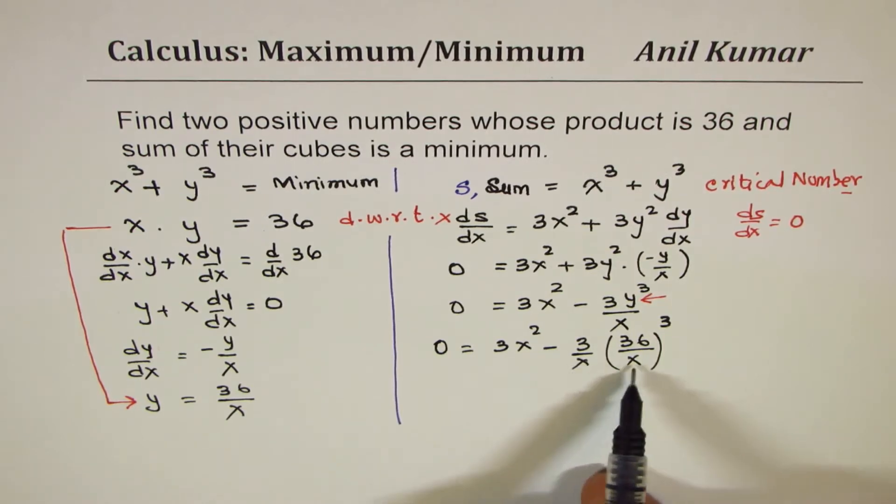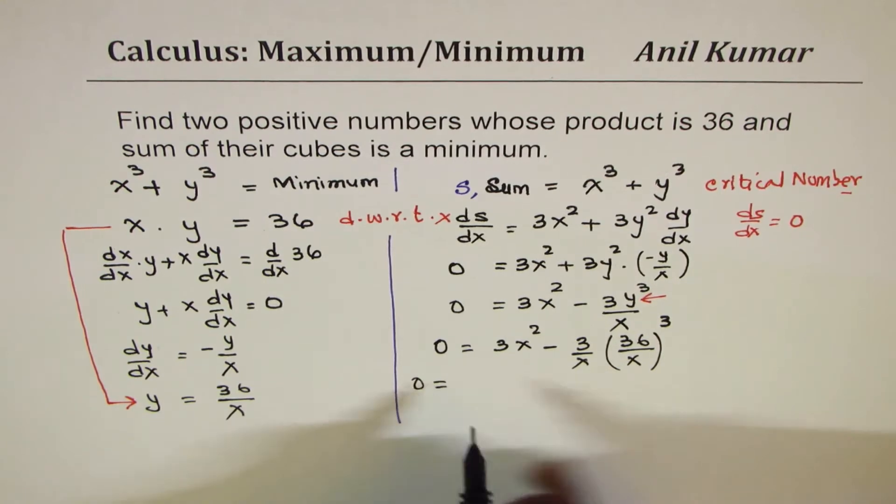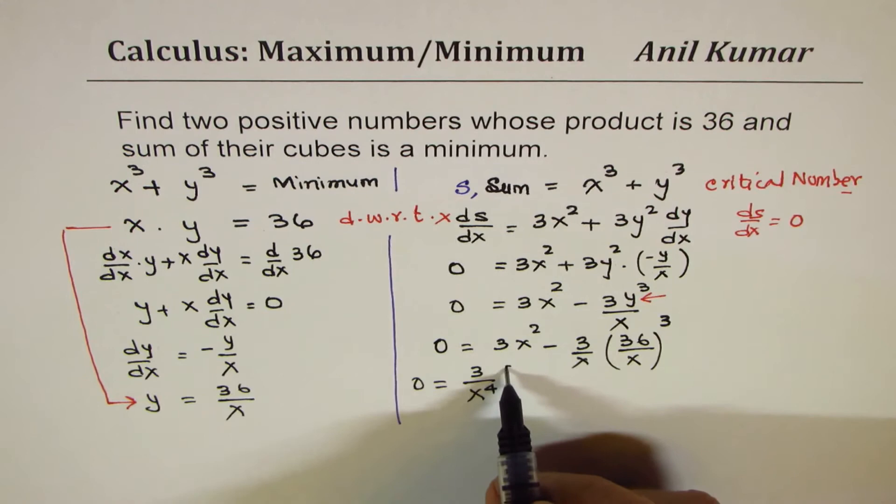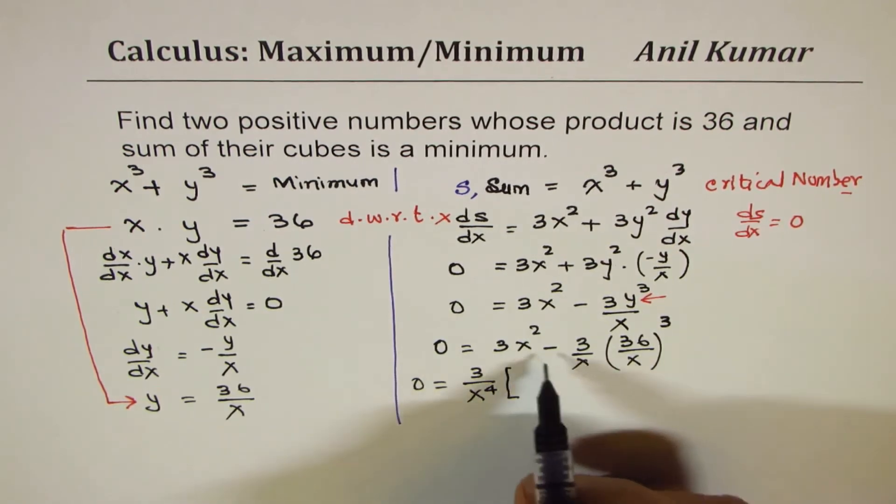Now to make this equal to 0, this is x to the power of 4 in the denominator, so we can take 3, 3 is common, over x to the power of 4, because that is x³ and this perfect. So what we get here is x to the power of 6 - x to the power of 2 plus 4 gives us 6.